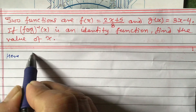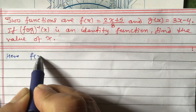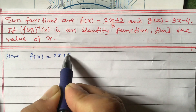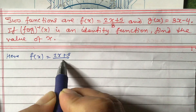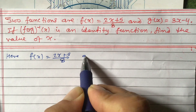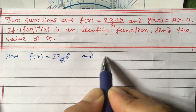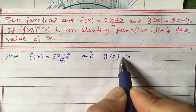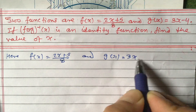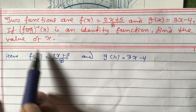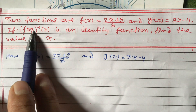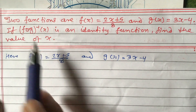Here f(x) equals (2x + 5) divided by 8, and g(x) equals 3x minus 4. These are given to us. Now we need to first find the composite function f of g(x).